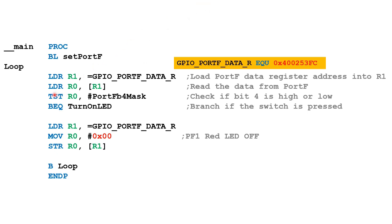The instruction LDR R0, [R1] reads the data stored at the address pointed to by R1. Since we loaded the Port F data register address into R1 earlier, this instruction loads whatever is stored at that address into R0. We then have two new instructions I have not used before — let's take a closer look.